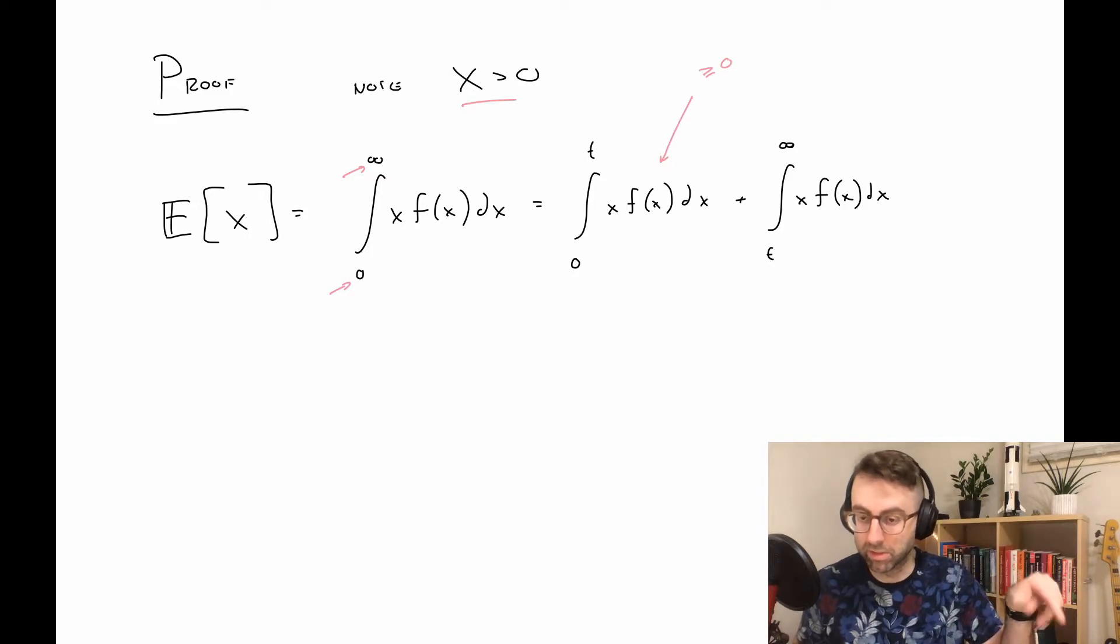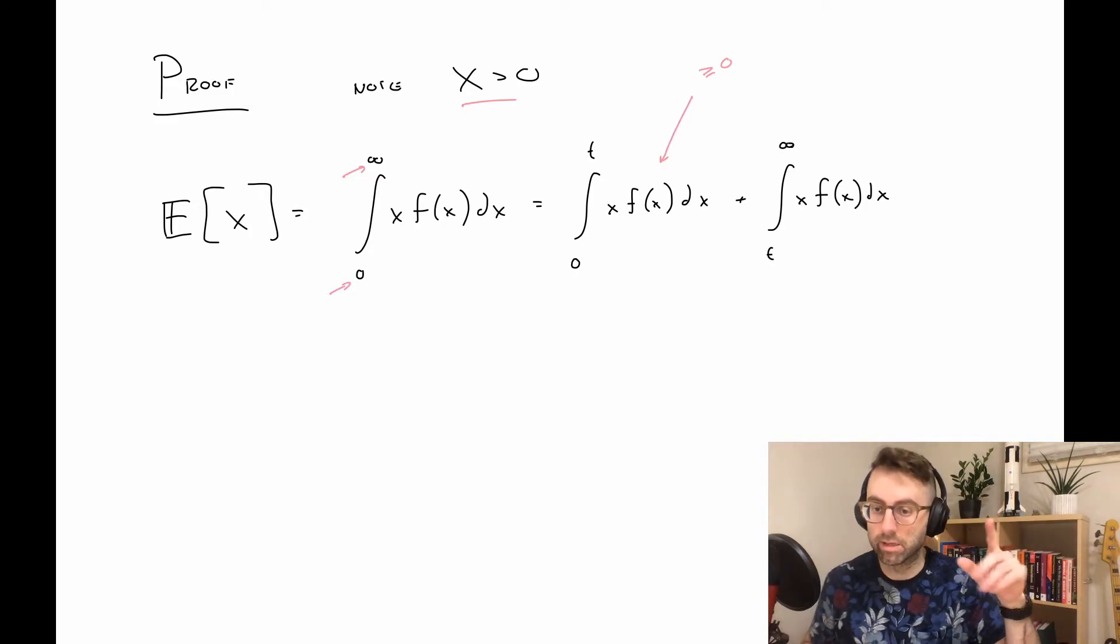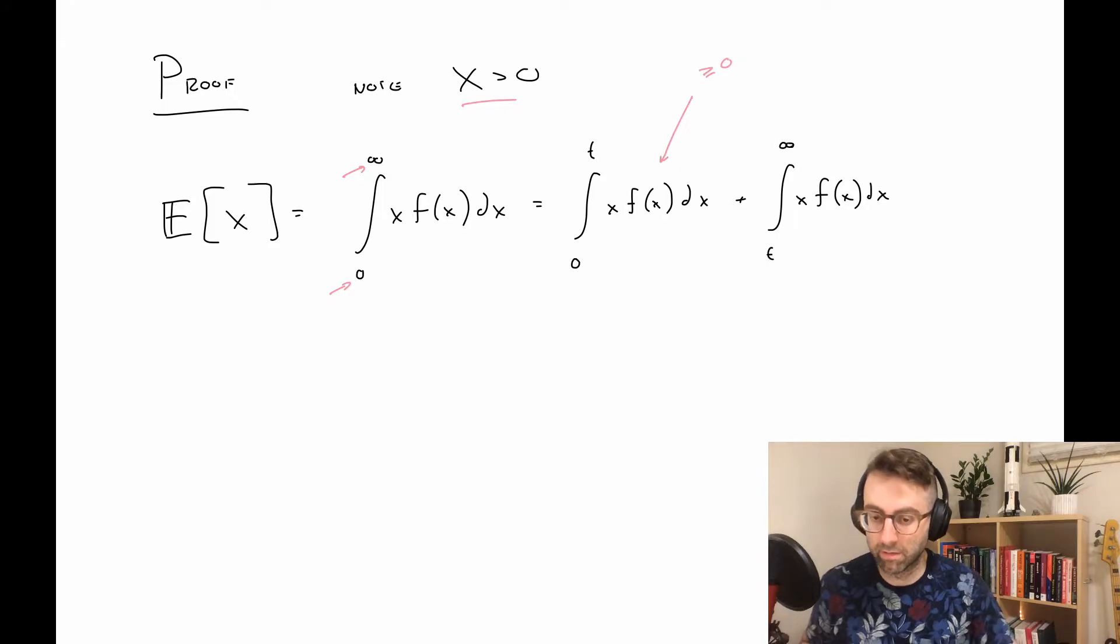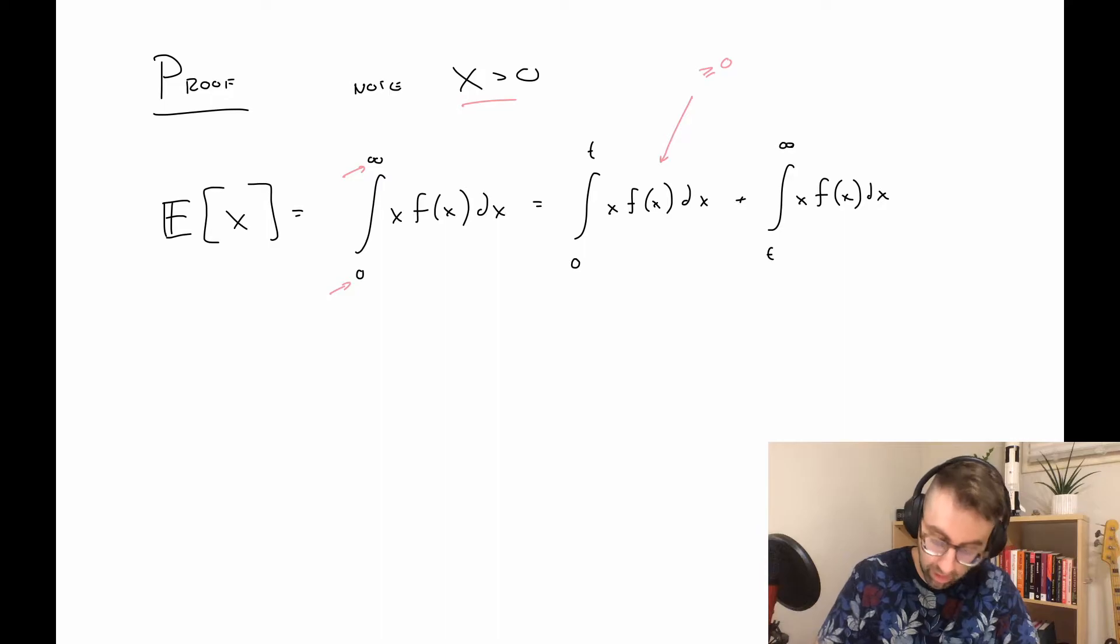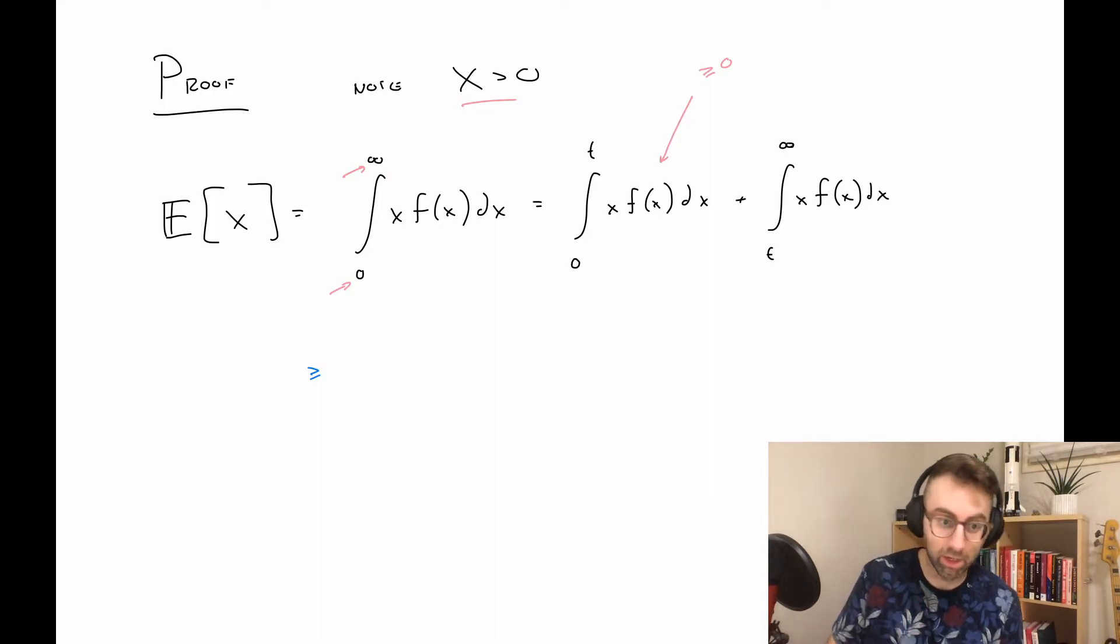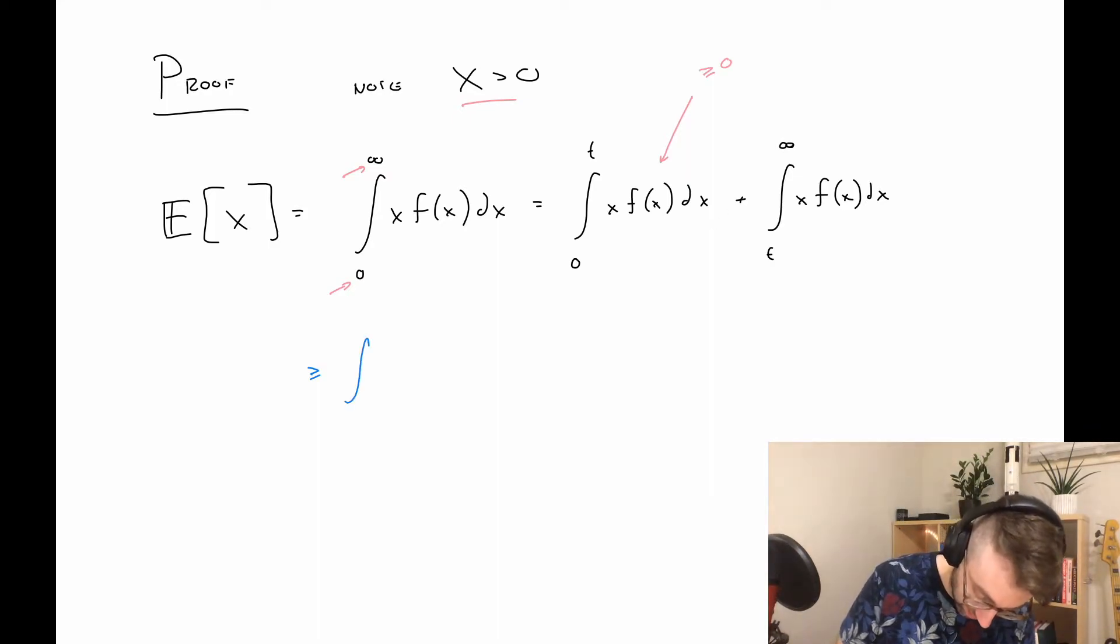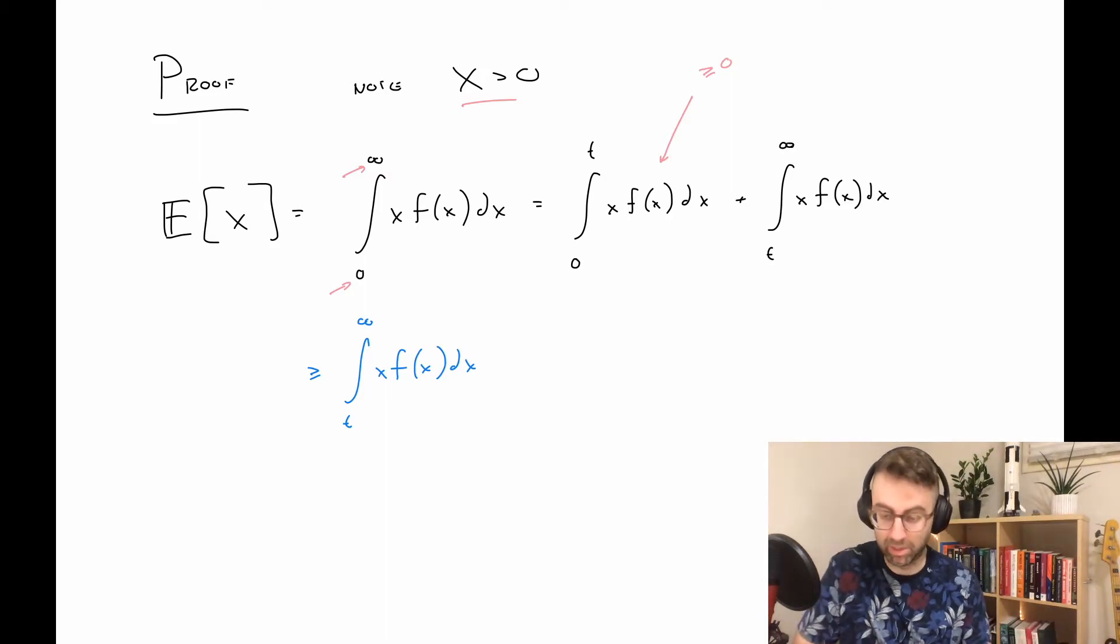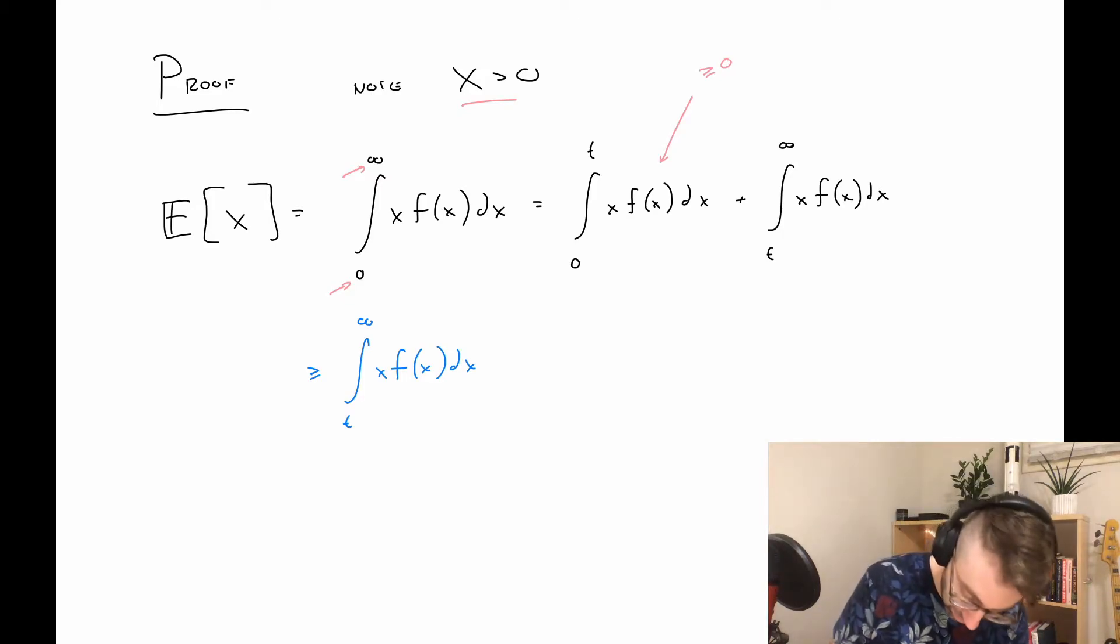It's important to note that this quantity here must be greater than or equal to zero because X can only take values between zero and t in this integral, and f(x) is a density function so obviously that's non-negative. The sum of these two integrals is clearly bigger than or equal to the second of those two integrals.